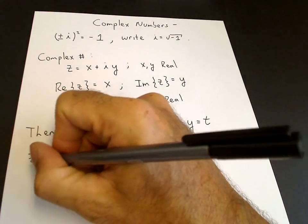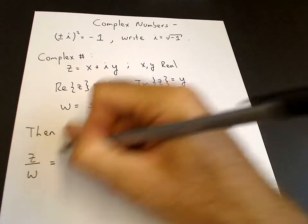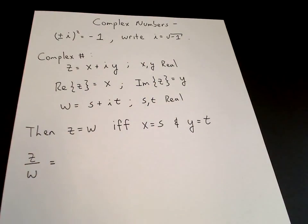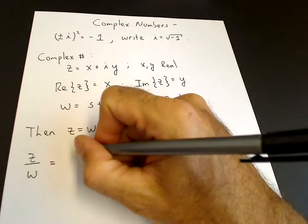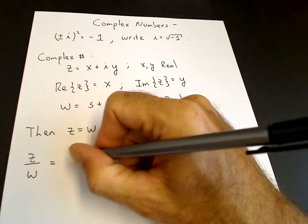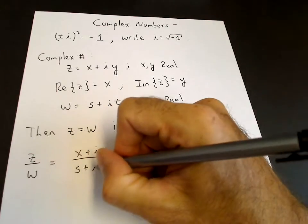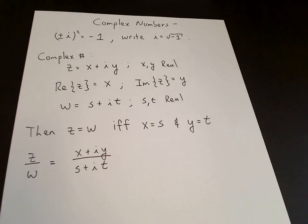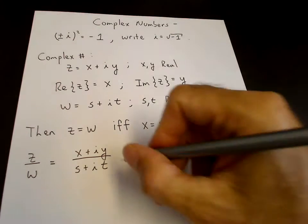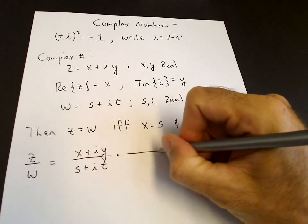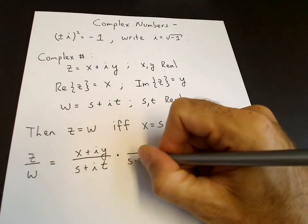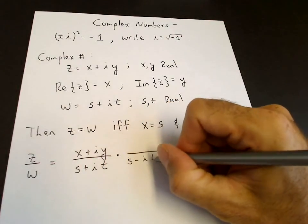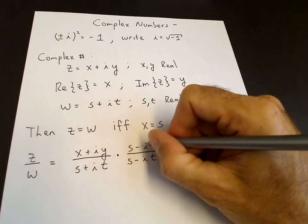If we divide two complex numbers, z divided by w, to show that this is a complex number we have to write it as a real part plus i times an imaginary part. So this is x plus iy divided by s plus it. In this form it doesn't look like a real part plus i times an imaginary part, but we can make it look like that by multiplying by 1, where the 1 is written as the denominator in the form s minus it over s minus it.